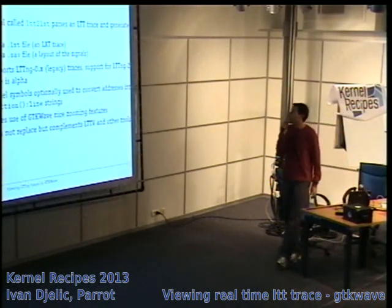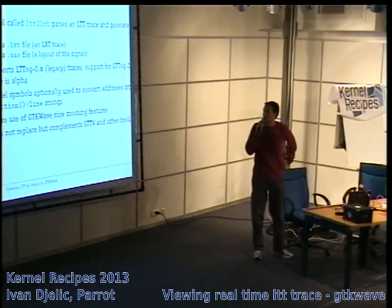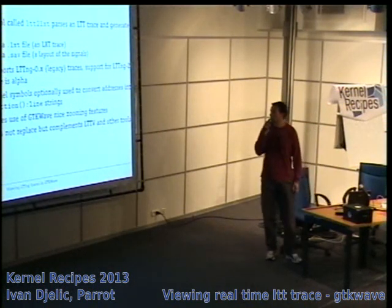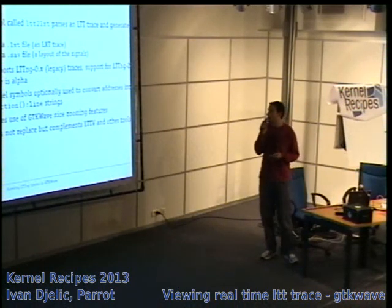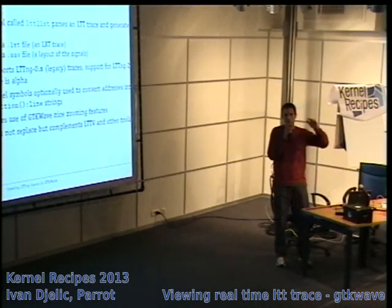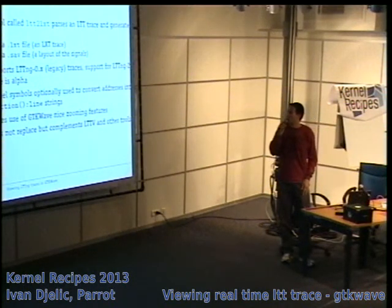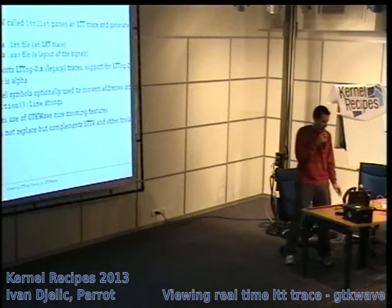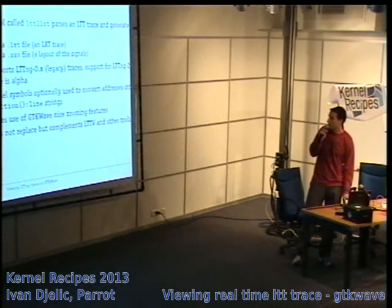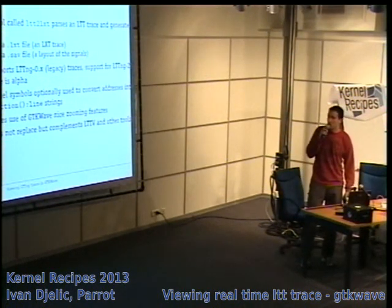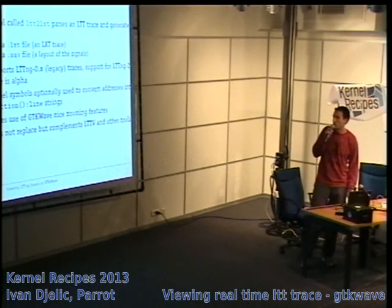The tool we developed is called ltt-to-lxt. The idea is to parse an LTT trace and generate an LXT file. More precisely, you get two files: one with the signals and a second for the layout — the ordering of the signals. Our tool mostly supports legacy LTTng 0.x traces, and we're trying to support the latest format, which is very alpha at the moment. A nice feature is that we take advantage of kernel symbols to transform addresses in the LTT trace data into function names and line numbers.